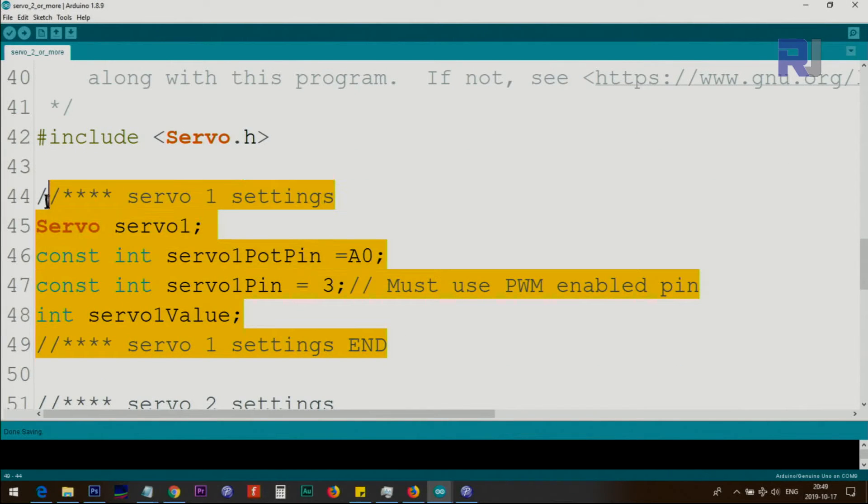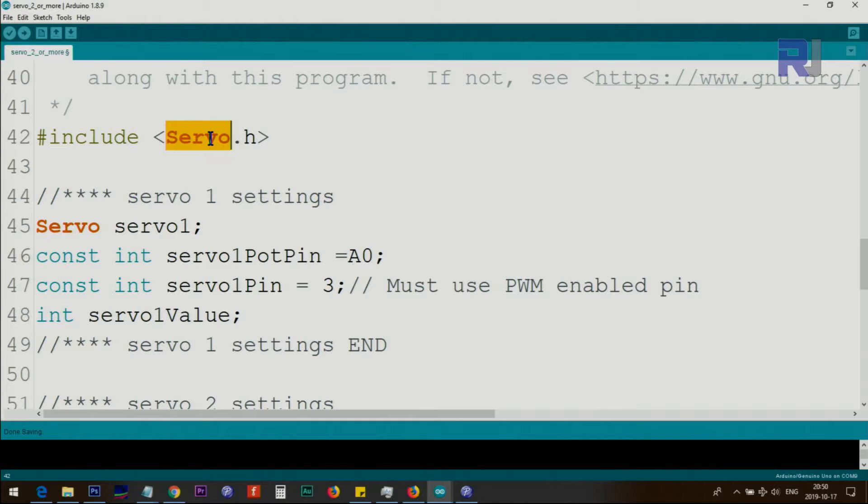This portion is for servo 1. We're getting the servo class and we create an instance of it and we call it servo 1. Then we assign a pin as a constant integer—we call it servo 1 pot pin or potentiometer pin, this is analog 0. And then another constant which cannot be changed is integer servo pin. This is the pin that sends signal—the servo pin will be PWM enable pin like pin 3, 5, 9, and other pins which I just shown you, otherwise it will not work. Then the servo 1 value is a value that when you rotate the knob the value will be assigned later on in the code.